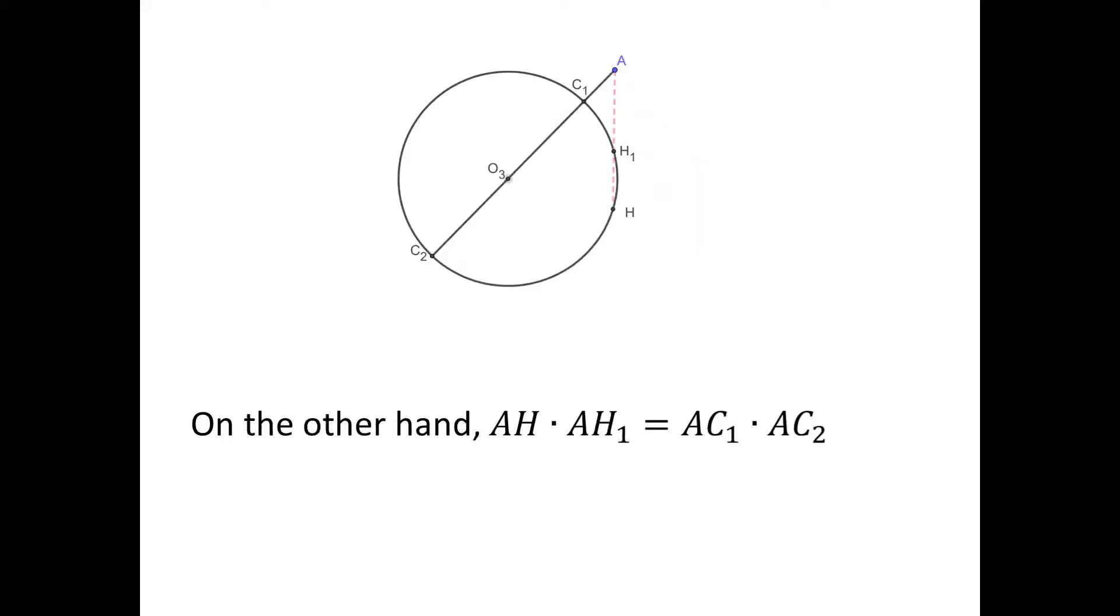On the other hand, we have AH · AH1 = AC1 · AC2. Then we have AB1 · AB2 = AC1 · AC2.